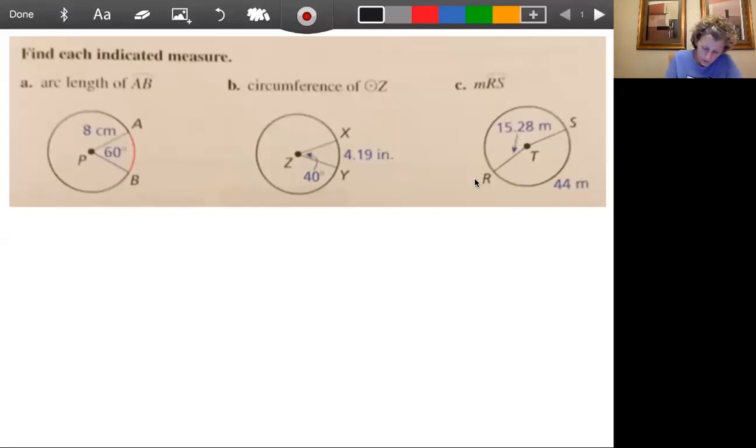And so what we're going to do is, if you can imagine this 60 degrees, this is also 60 degrees as far as the measure. And how much of the circle is that? Well, it's 60 out of the whole thing, which is 360. All right, so it's 60 out of 360, which means that little portion right there is one-sixth of the whole circumference.